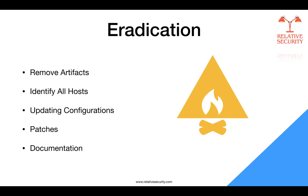Once you understand the weaknesses that were exploited, you can start remedying the situation. The next point in eradication is installing patches and fixing vulnerabilities identified during the incident response process. Additionally, using original disk images helps restore systems to a known good state. The eradication phase also involves identifying and mitigating all vulnerabilities exploited during the incident, such as removing malware and disabling breached user accounts.